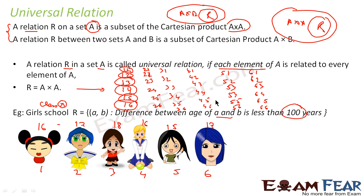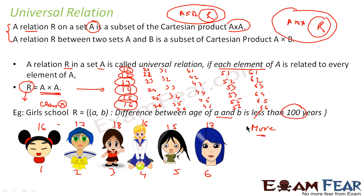So here the relation contains all the elements of A cross A — this is called universal relation. In contrast, if I change the condition to 'difference more than 100 years', this becomes an empty relation, because the difference between any two girls' ages is never more than 100 years.